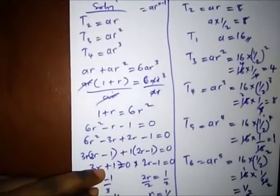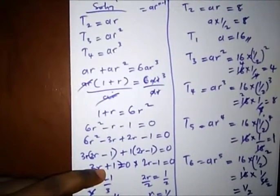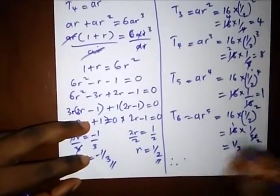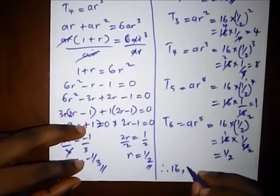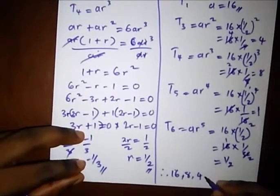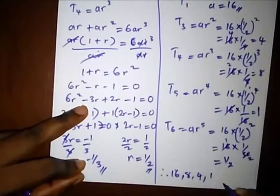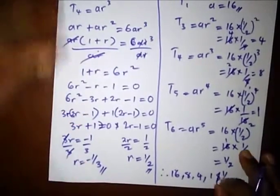So therefore, find the first 6 terms. Our first 6 terms are: the first term being 16, second term 8, third term 4, fifth term 1, and our sixth term 1 over 2. So this is our final answer.